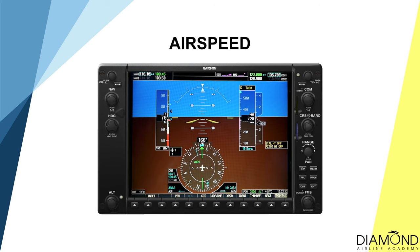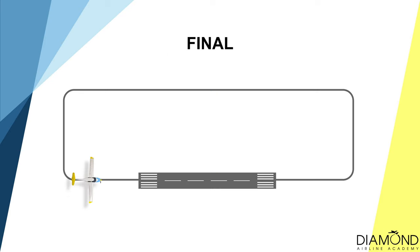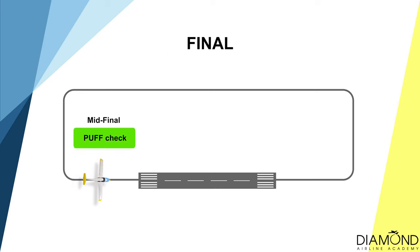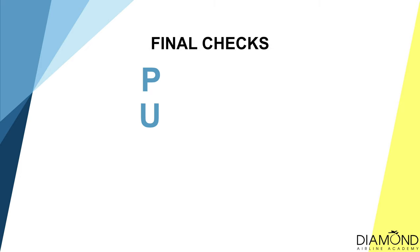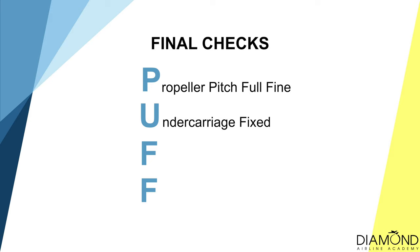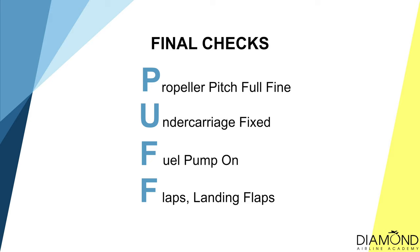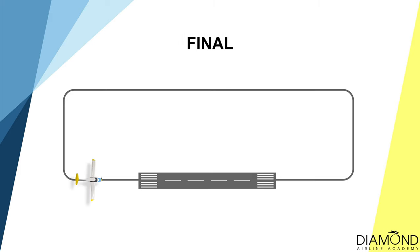The last element is airspeed. During normal approach, the approach speed should be 70 knots. When the aircraft reaches mid-final at 300 feet, conduct the short final PUFF check: Propeller pitch full fine; Undercarriage fixed; Fuel pump on; Flaps — landing flap extended. After completing the short final checks, continue with aim point, aspect, and airspeed to maintain correct lateral and vertical profile until the runway threshold.